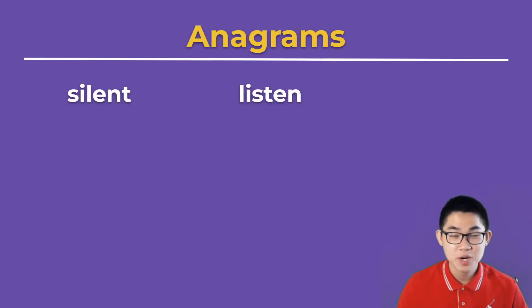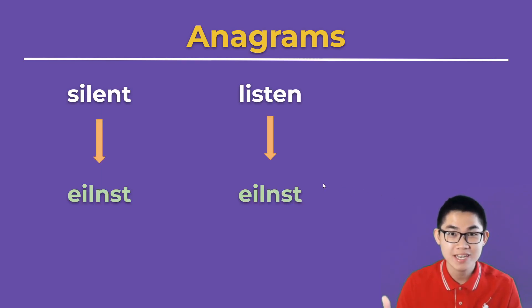So one way to determine if two words are anagrams is to take them and sort the letters, just like sorting numbers from least to greatest. After we sort them, we both get E, I, L, S, and T. This indicates that silent and listen are anagrams.